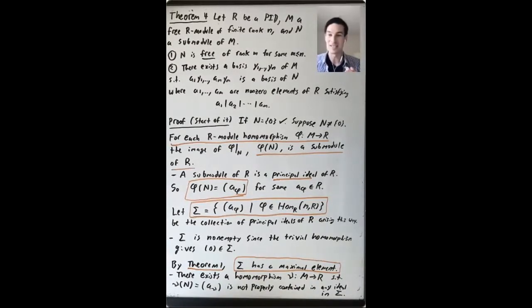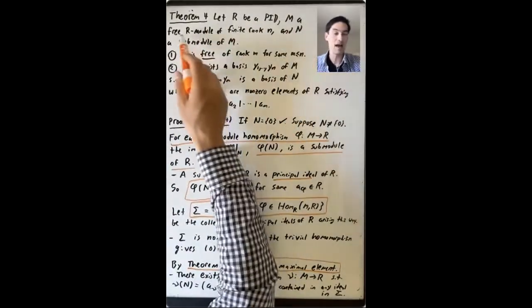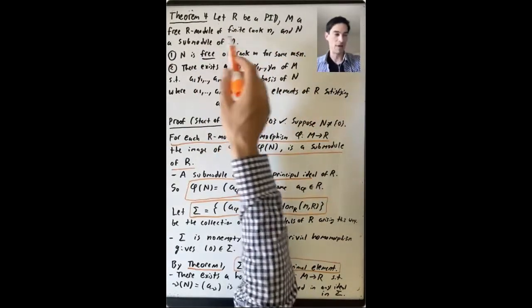So first, let's just recall what this says. Theorem 4 says: let R be a PID, M a free R module of finite rank little n, and N a submodule of M.